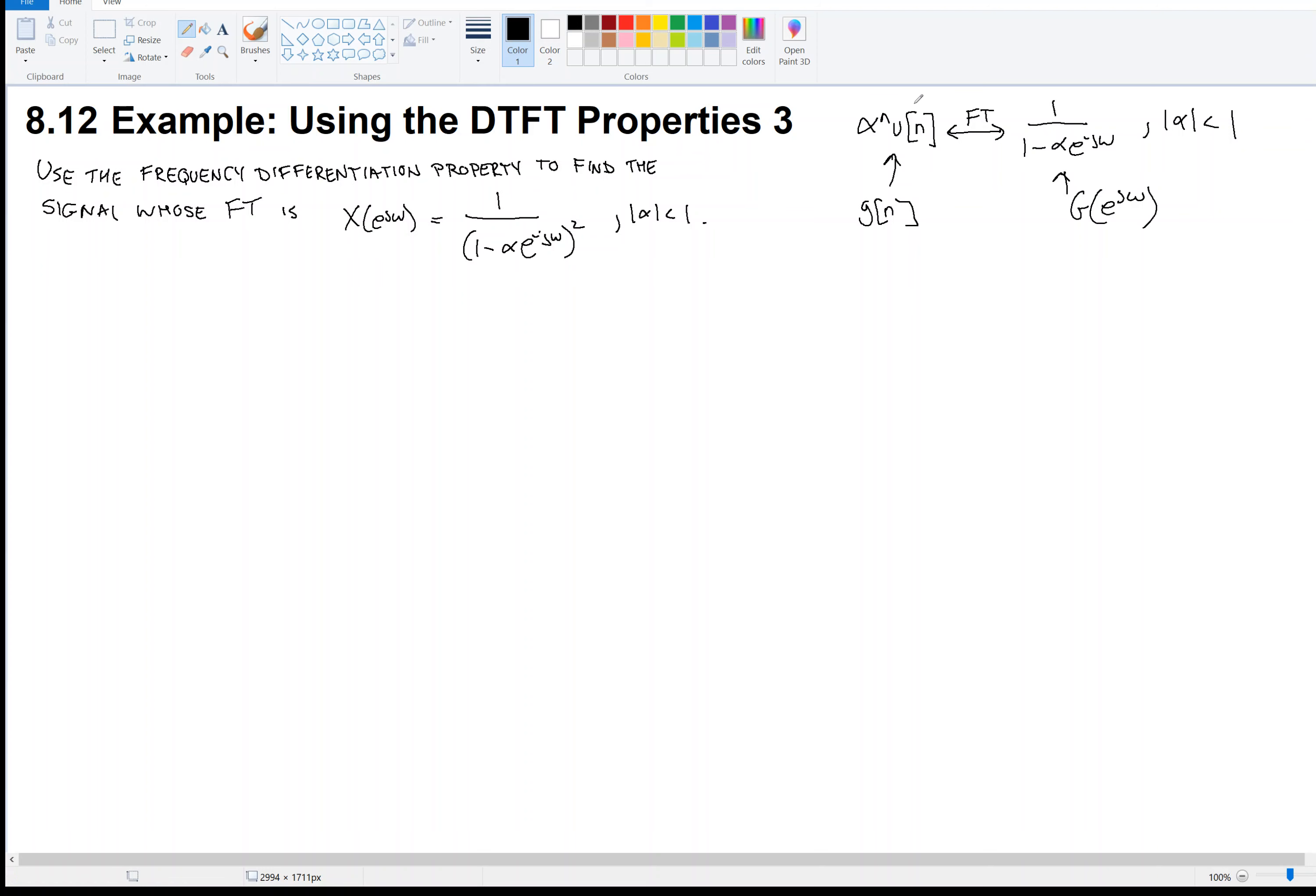I want to remind you of this Fourier transform pair. This is in your table, and has been proved in a previous example video. The reason I bring this up is because the result looks a lot like this, except this one has a square in the denominator and this one does not. So it's going to be related to this, and we're told in the problem to use the frequency differentiation property.